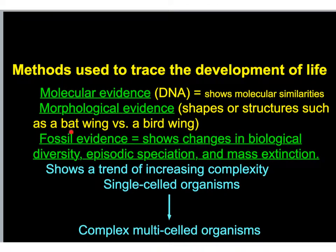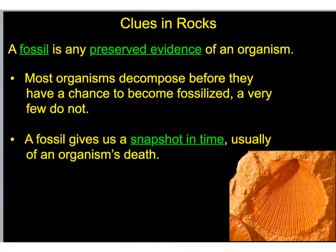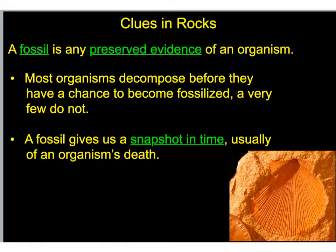Remember that fossils are our third branch of evidence that evolutionists will use to argue for their point of macroevolution. What is a fossil? A fossil is any preserved evidence of an organism. It's like a snapshot in time, usually the organism's death. It's some kind of preserved evidence — that organism is dead, probably died a long time ago, and it's some kind of evidence that it existed at one point.